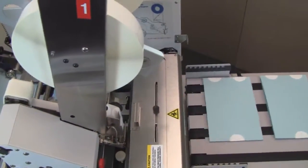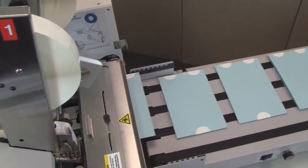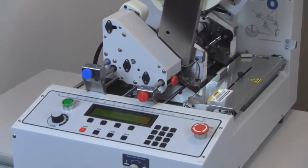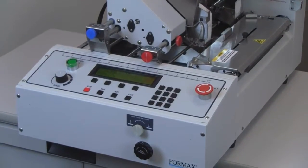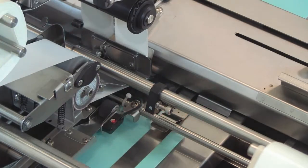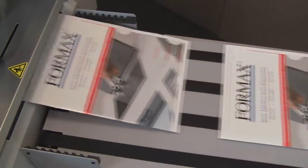The tabbing system is available in three configurations. The FD282 stand-alone tabber can be used in line with a variety of feeders and output devices. It can process up to 25,000 pieces per hour and accommodate media sizes up to 11 inches wide and up to 1 quarter inch thick.